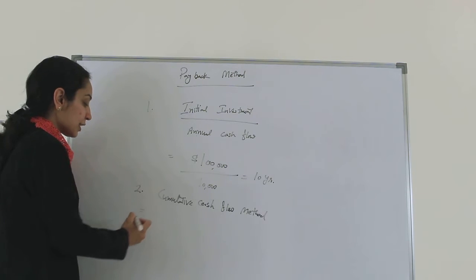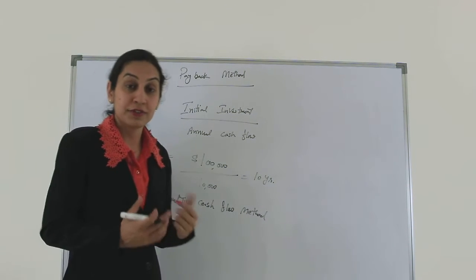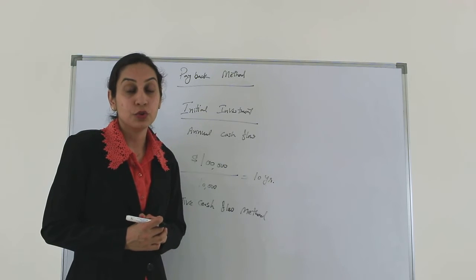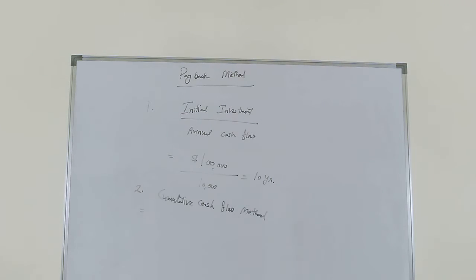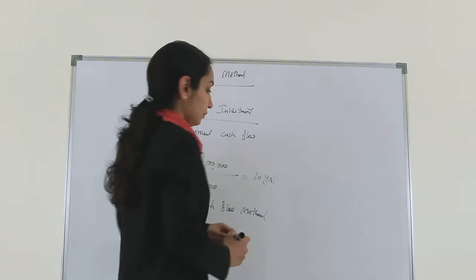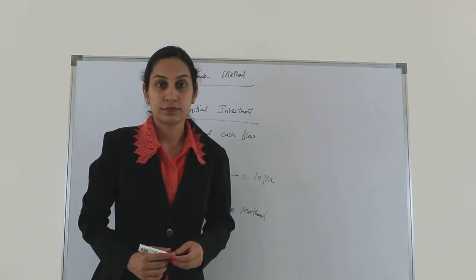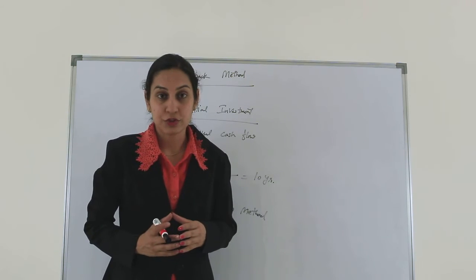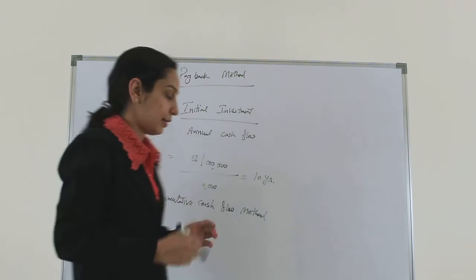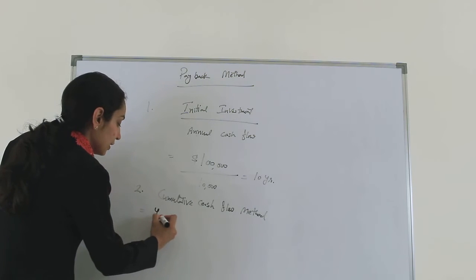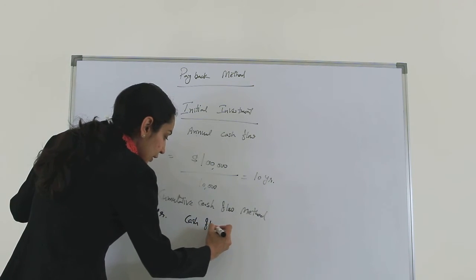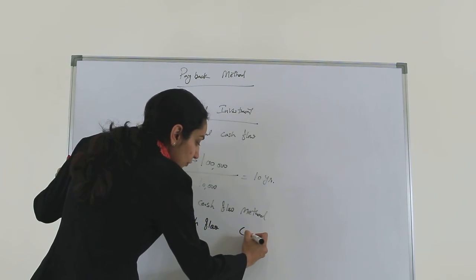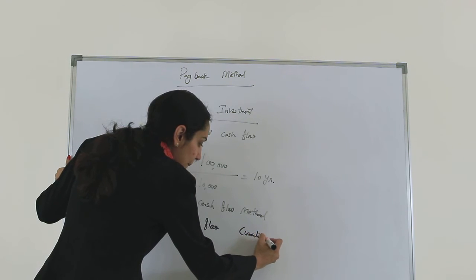What if a company is expecting uneven cash flows in different years? How do we calculate in those cases? When a company has uneven cash flow, we set up a table with three columns: year, cash flow, and cumulative cash flow.